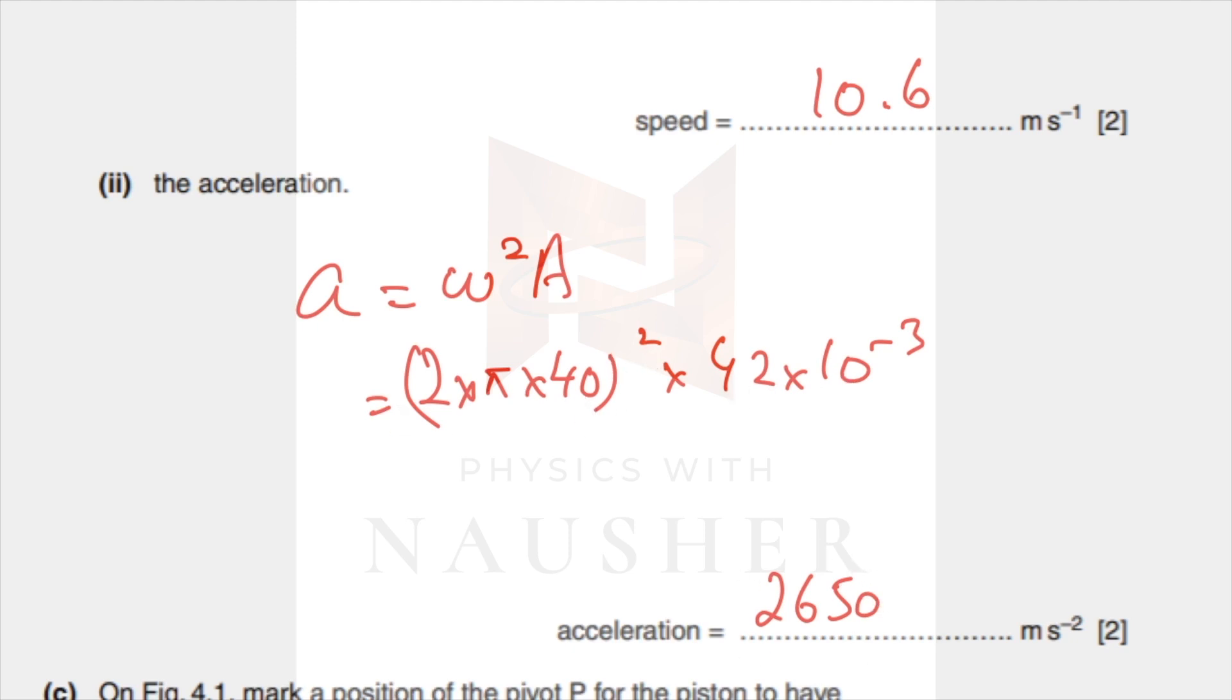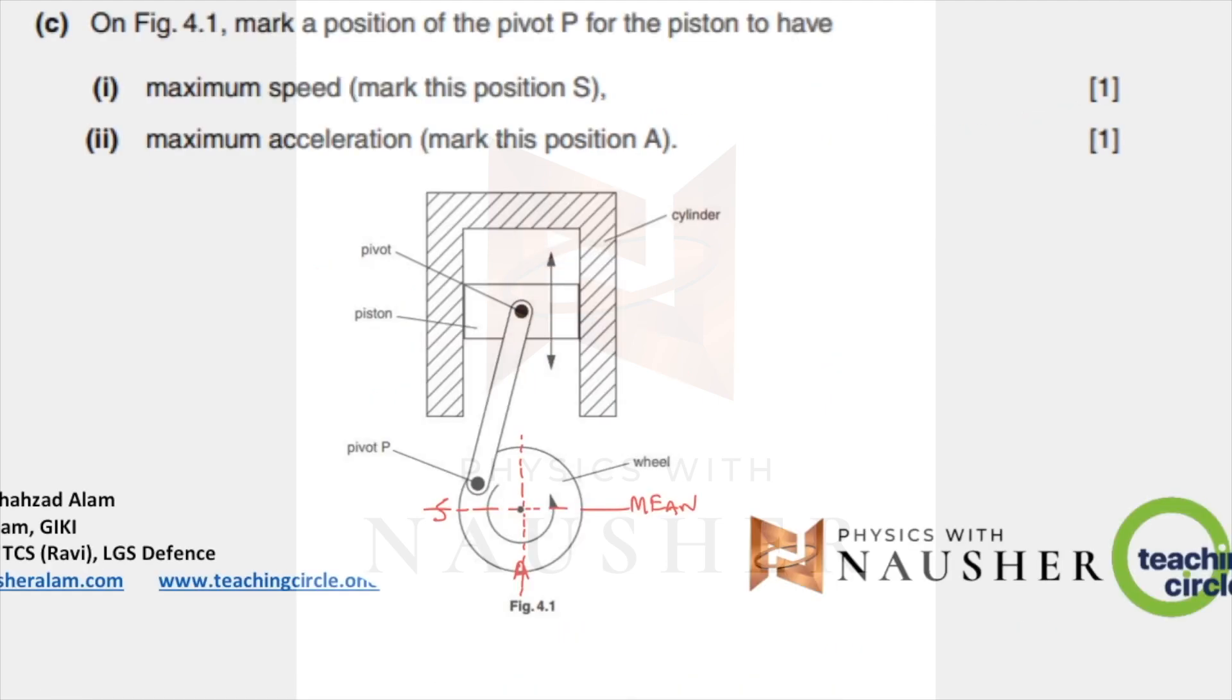Part C: what is the maximum speed? Label the position for the pivot. This is your pivot P. Maximum speed is at the mean position, so you could write S over here or over there because this is the center of rotation and the wheel is spinning about this point. This is the central line, so either write S over here or there. Maximum acceleration is always at the peak position, so the amplitude of your oscillation would be over here. Write A over here or here.